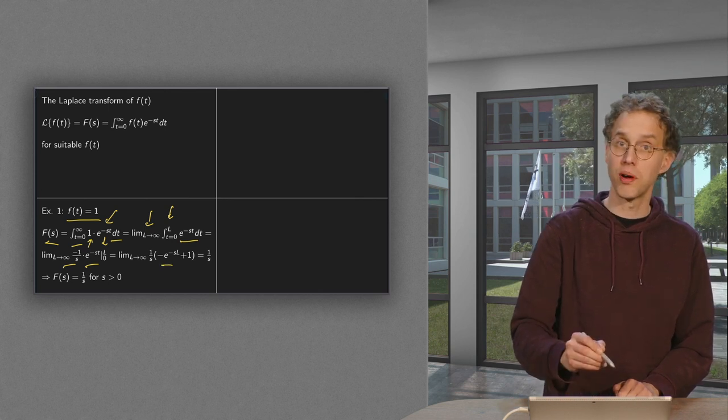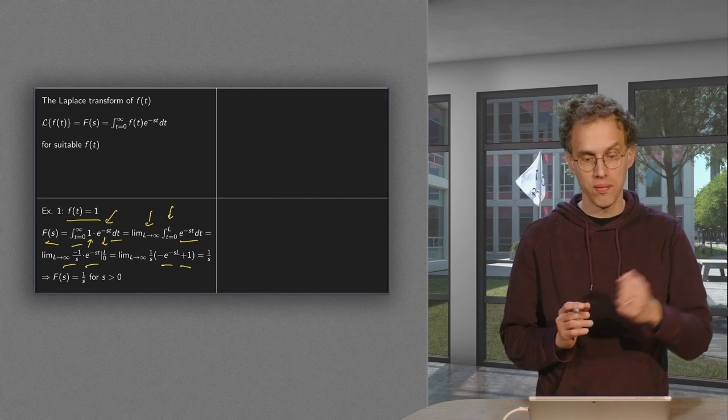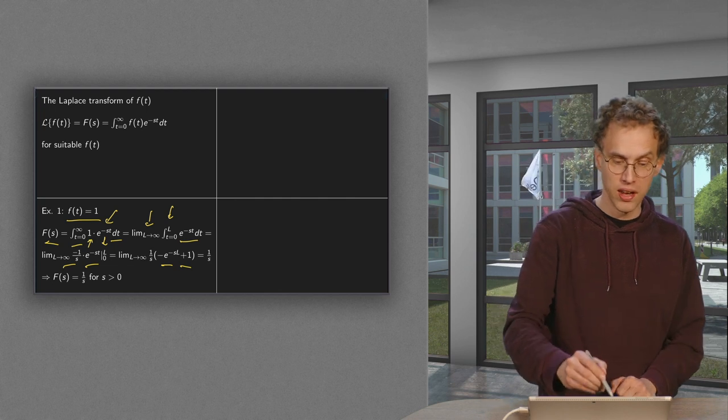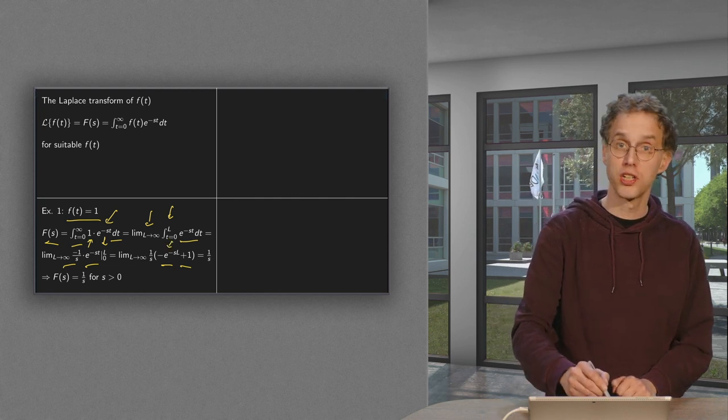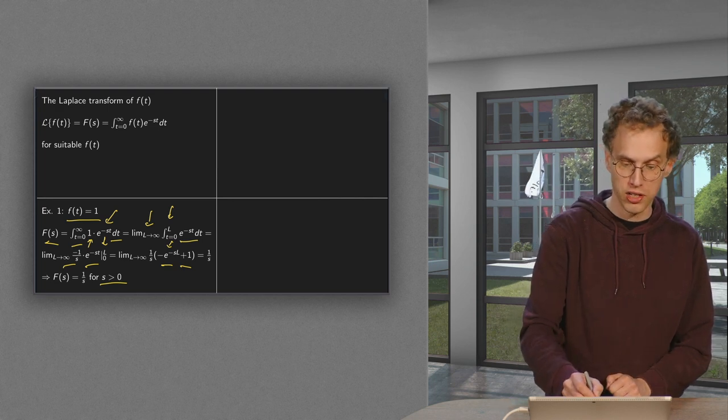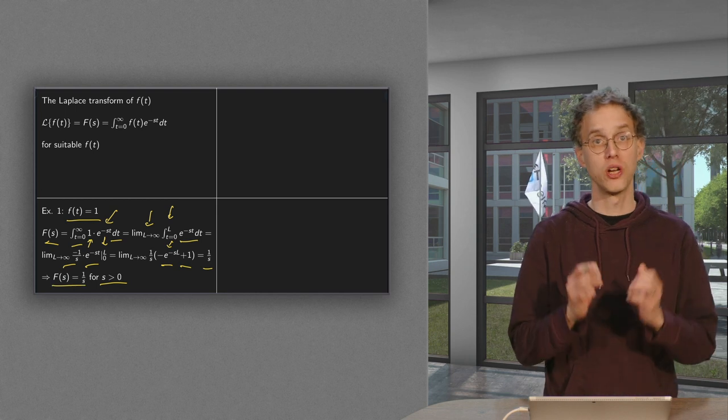Upper boundary: minus e to the power minus sL. Lower boundary: just 1. And then if we send L to infinity, this term disappears provided s is bigger than 0, and we are just left with 1 over s. So our Laplace transform of 1 is 1 over s.